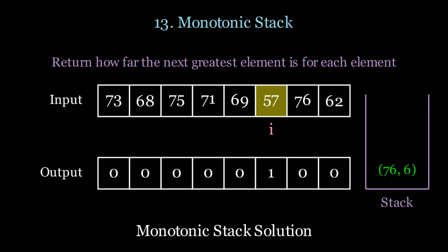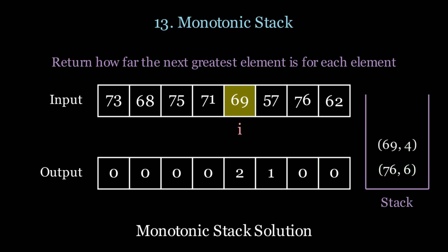76 is greater than 57, so we found the next greatest element, and we add 57 to the stack. We go to 69 — 57 is less than 69 so we pop it off. However 76 is greater than 69, so we use it as the result. Now we add 69 to the top of the stack. Notice that we keep a decreasing order in the stack.